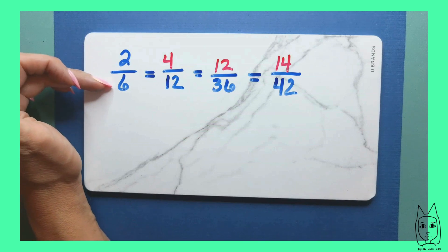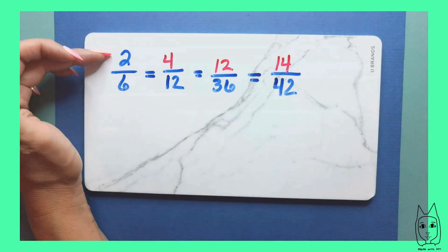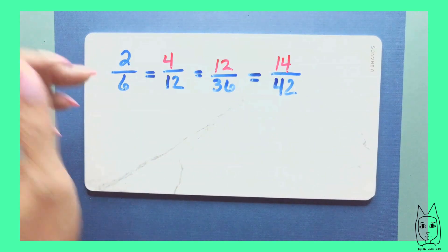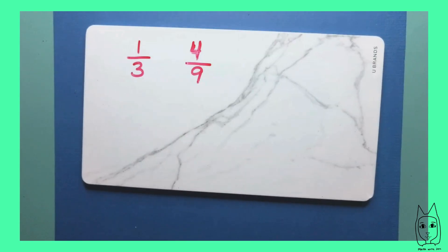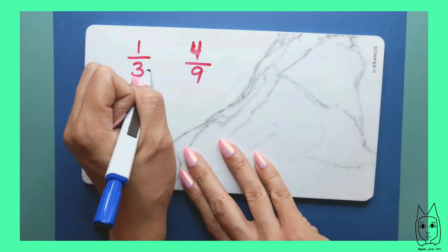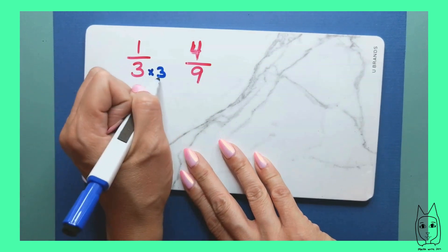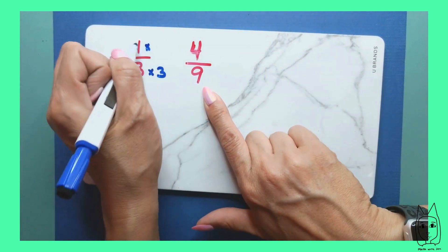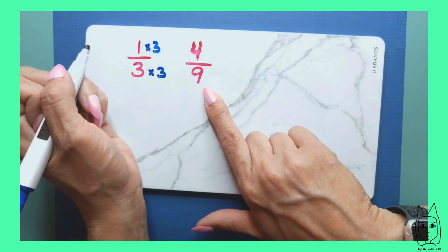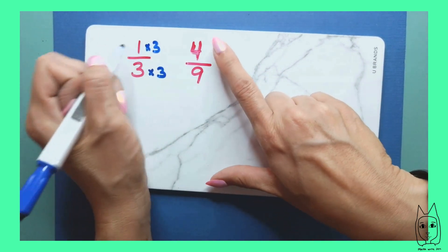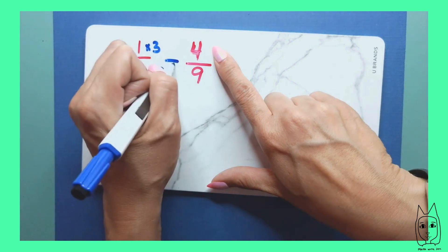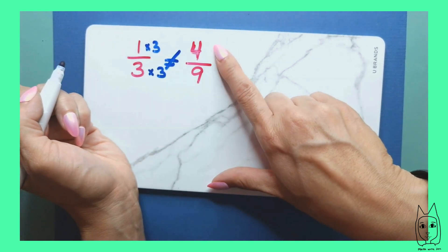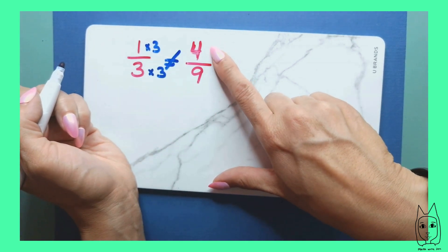The denominator changes, and the numerator also has to change because they're all talking about the parts needed to make a whole. For these to be equivalent — if I'm going to say each of these parts is 3 to get to 9 — that means each of these parts would need to be 3. But one times three is not four, so these are not equivalent to each other. For them to be equivalent, this would have had to be a 3.